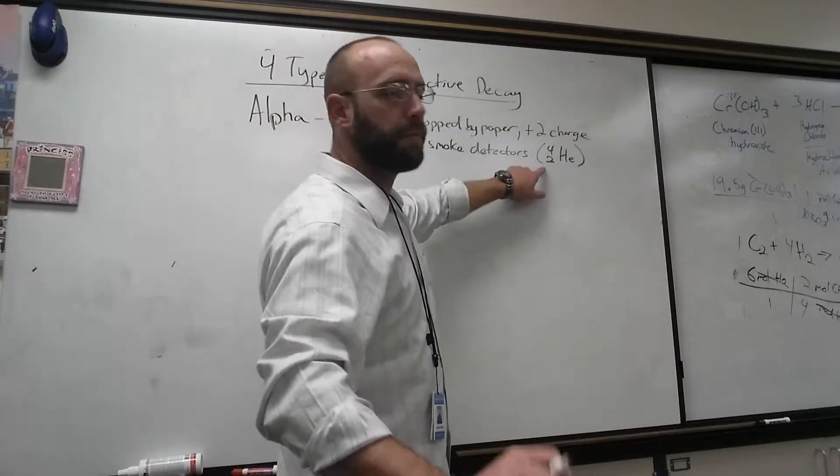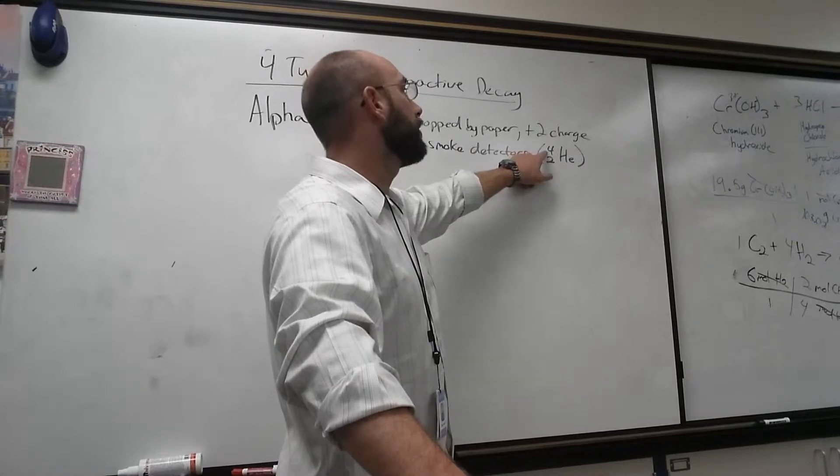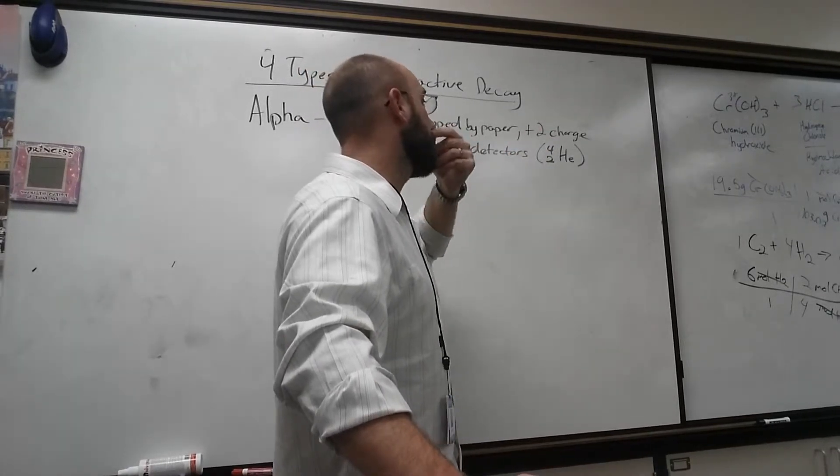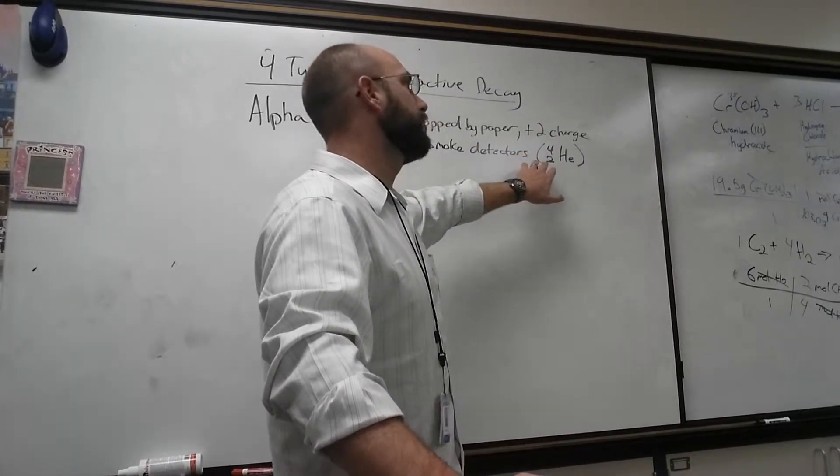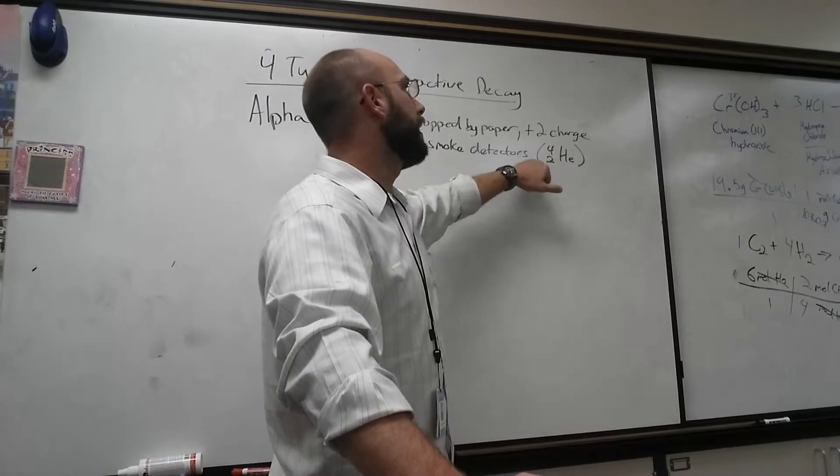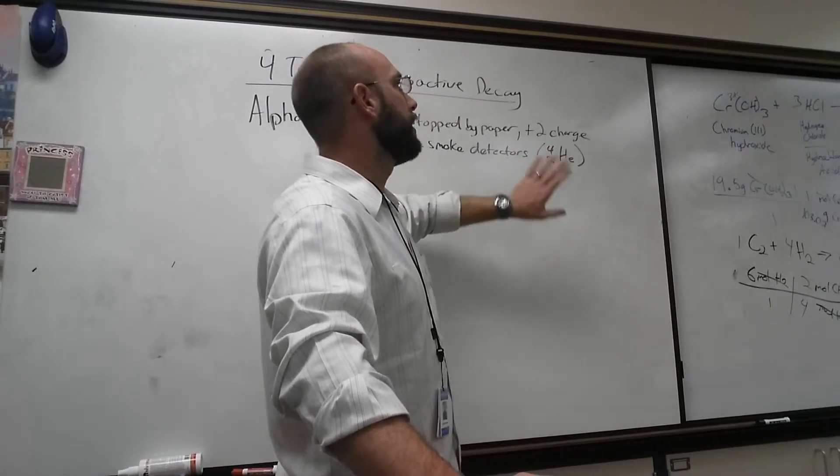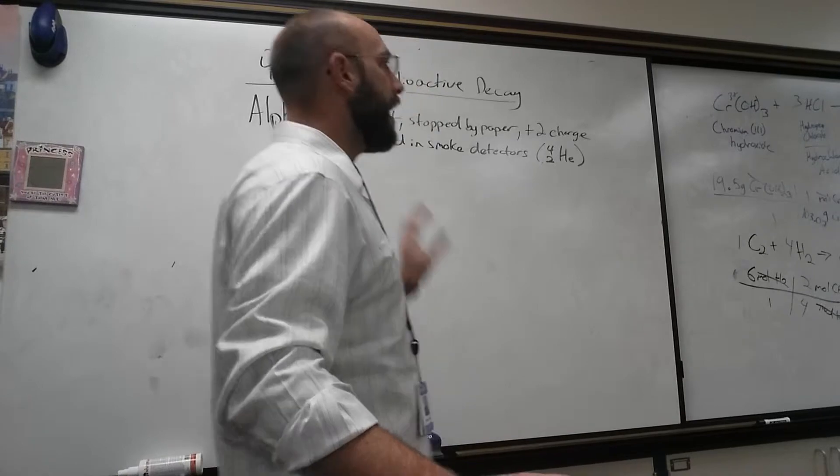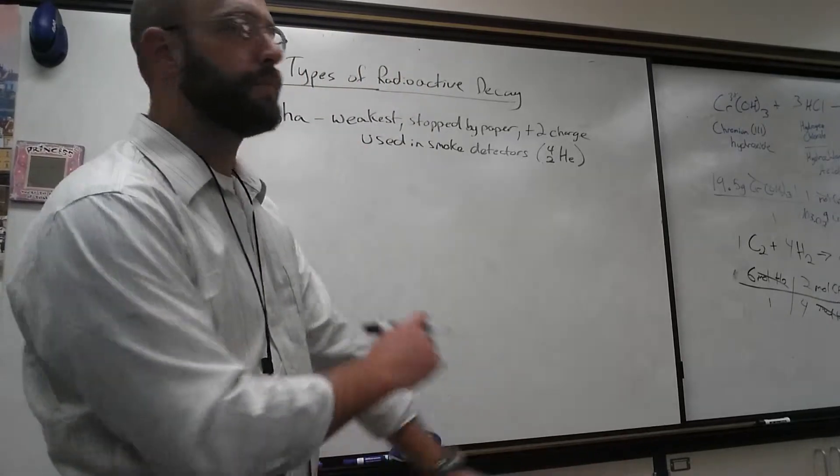Its symbol is actually represented by helium 4-2-He. This two will be the number of protons, and this four is the number of protons and neutrons together. So this would have two protons and two neutrons. This would be the mass and the atomic number. That is going to decay off of our substance.